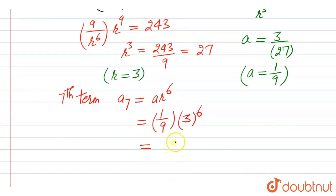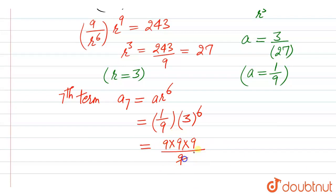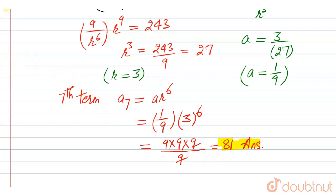3⁶ = 9 × 9 × 9 × 9... calculating: 3⁶ = 729. So a₇ = 729/9 = 81. This is the required answer. Thank you.